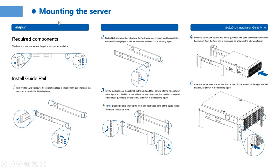This page shows how to mount the server in the rack. Install the guardrails by following the steps: step 1, step 2, step 3, step 4, step 5. When you need to mount the server, you can follow the guide to mount the server.